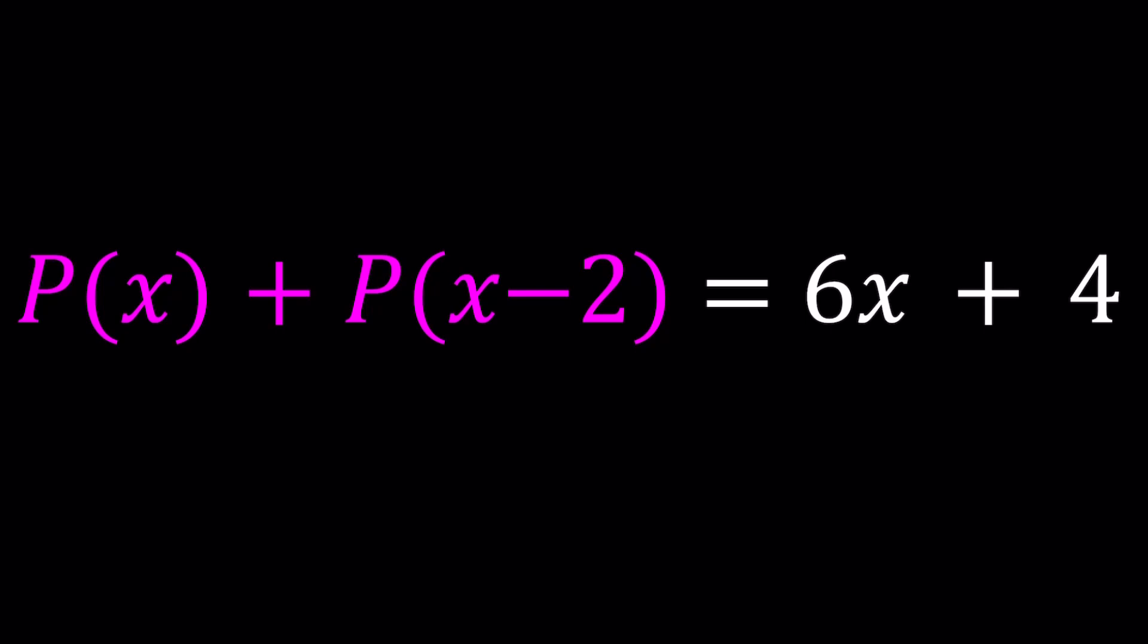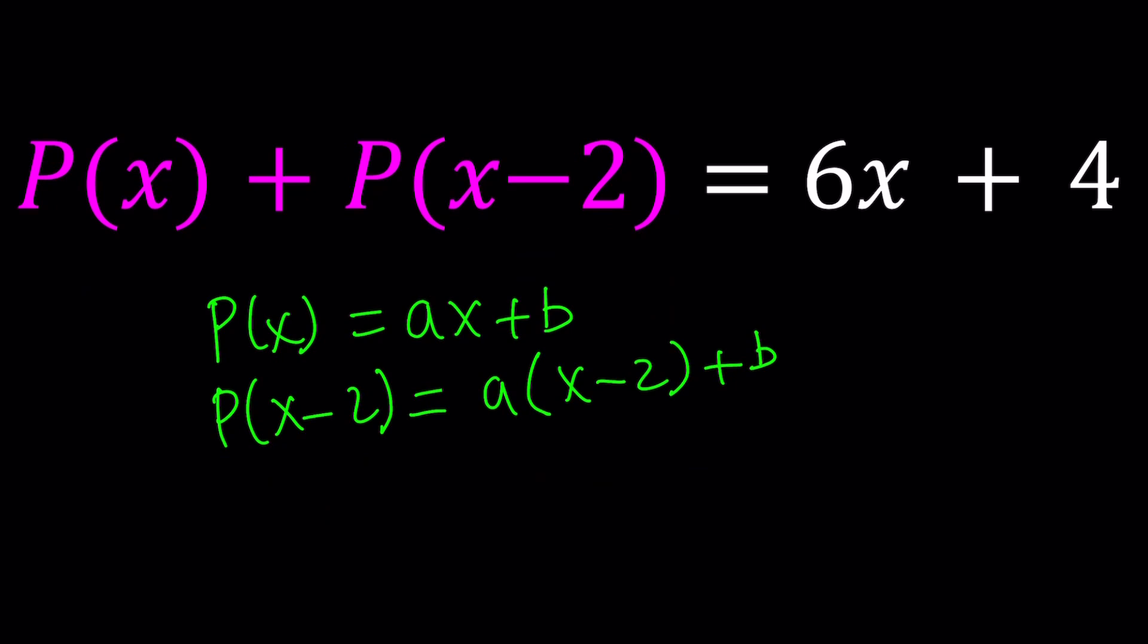So I'm going to replace P(x) with Ax + b then. That's appropriate for a linear polynomial. And what does P(x-2) mean? Replace x with x-2 on both sides, and then simplify the resulting expression, which is Ax + b - 2a.